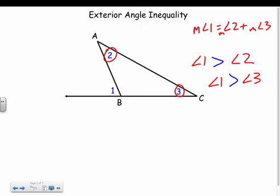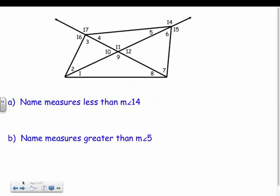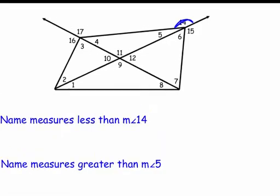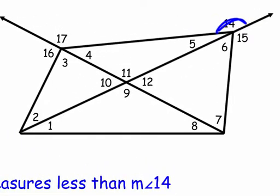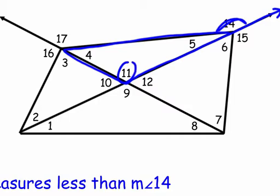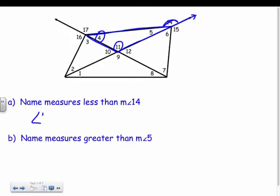Let's apply that — name measures less than angle 14. Angle 14 is the exterior angle to this triangle, so it's greater than the two remote interiors: angle 4 and angle 11.